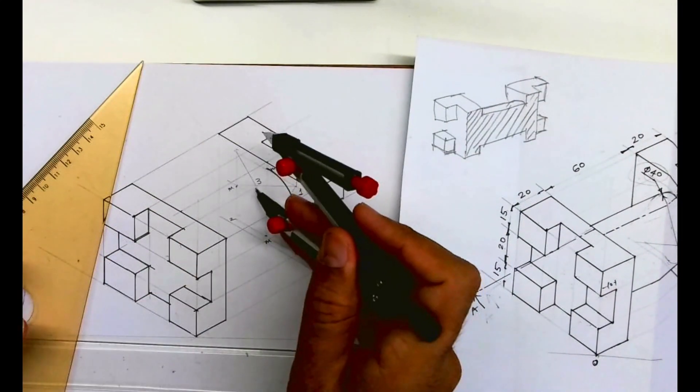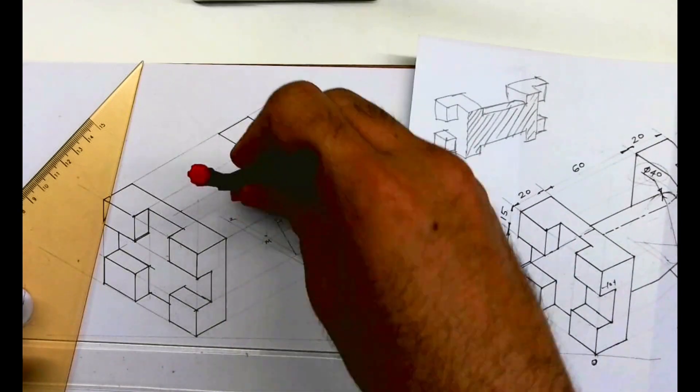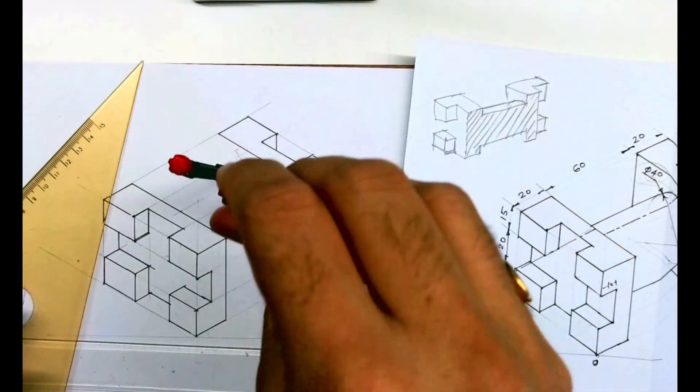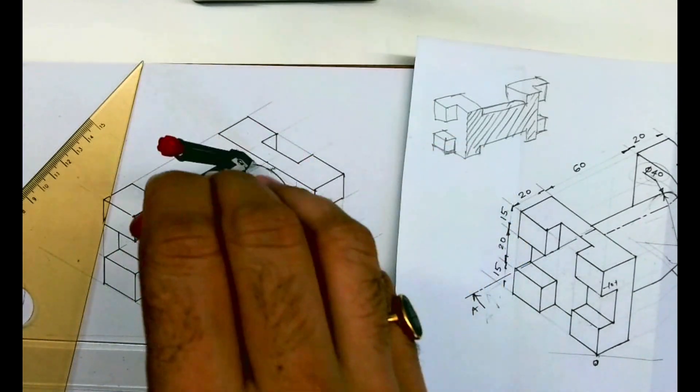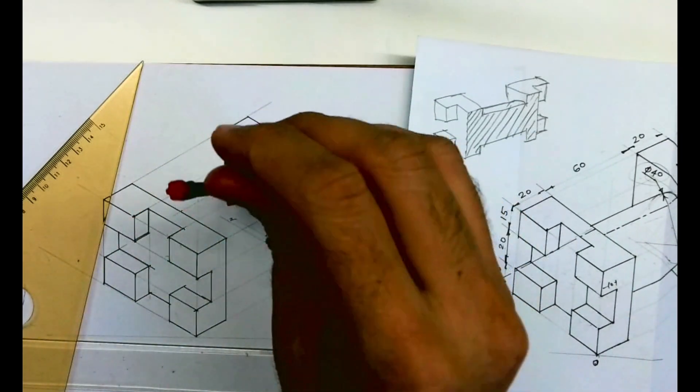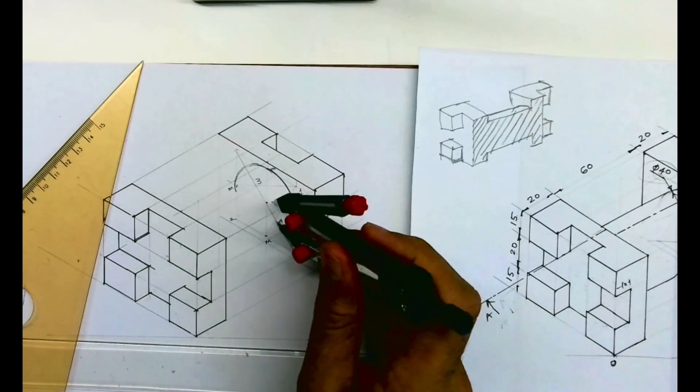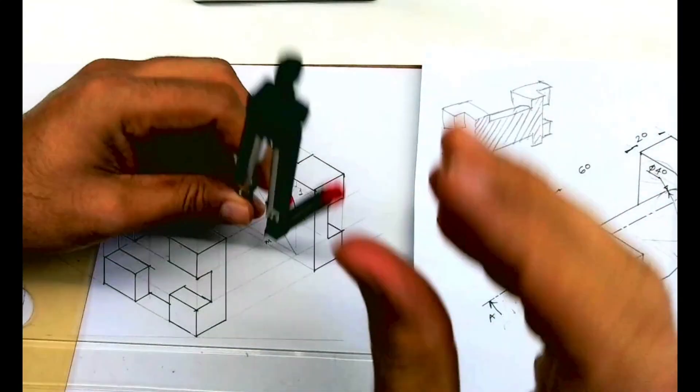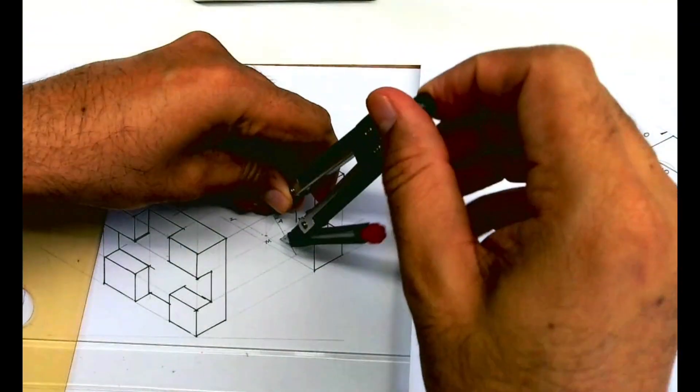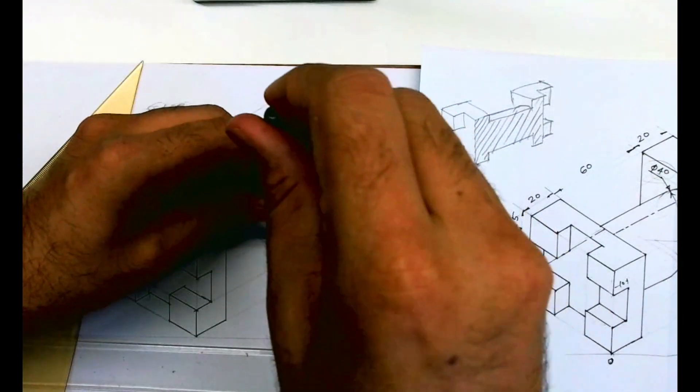Then I will take three to M, then four to M, see. And then I will draw tangent. Three to M and four to M, and we'll draw tangent.